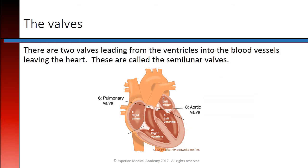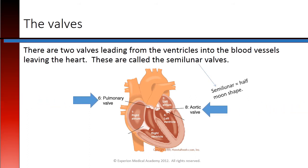There are two valves leading from the ventricles into the blood vessels leaving the heart. These are called the semilunar valves. Semilunar just means half moon shape. These are the pulmonary and aortic valves.